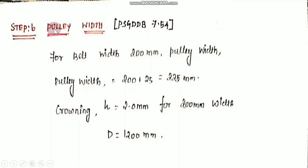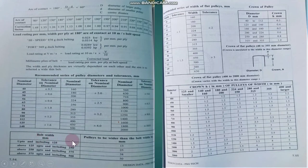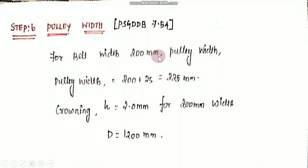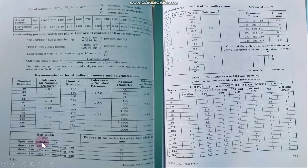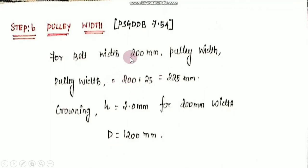The next step is the pulley width, found from page 7.54. The belt width is 200 mm. For belt widths above 125 mm up to and including 250 mm, we add 25 mm to the belt width to get the pulley width. So the pulley width is 200 plus 25 equals 225 mm.